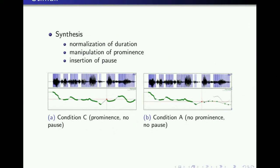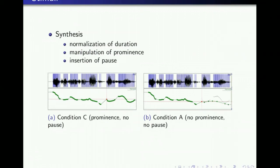To control the effect of duration, all recorded sentences were normalized in duration with Praat. The recording of target sentences with prominence on the right-dislocated part was taken as stimuli for condition C. Stimuli for condition A were synthesized from those of condition C by manipulating the pitch contour to mimic pitch compression of the corresponding sentences in RD reading. Stimuli for conditions B and D were generated from those of conditions A and C by inserting silence of 300 milliseconds between the two parts of a sentence.